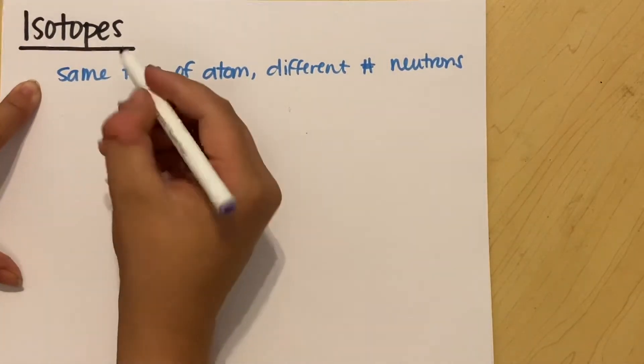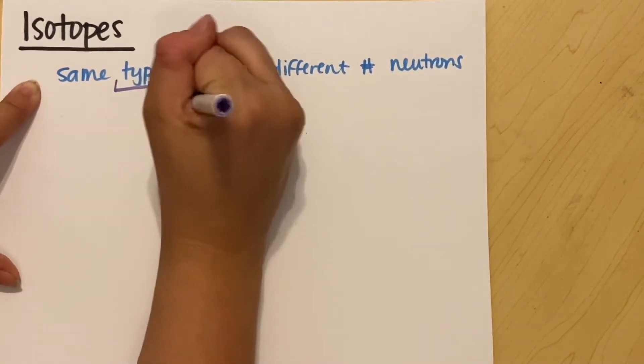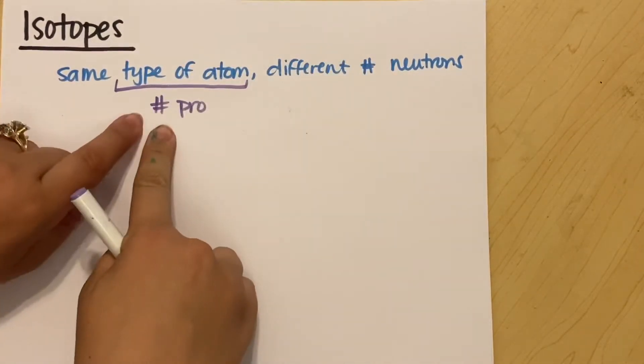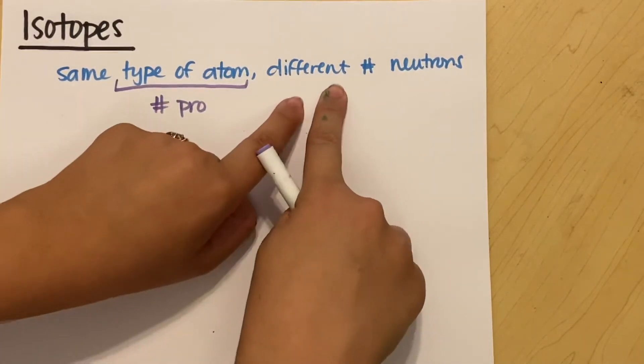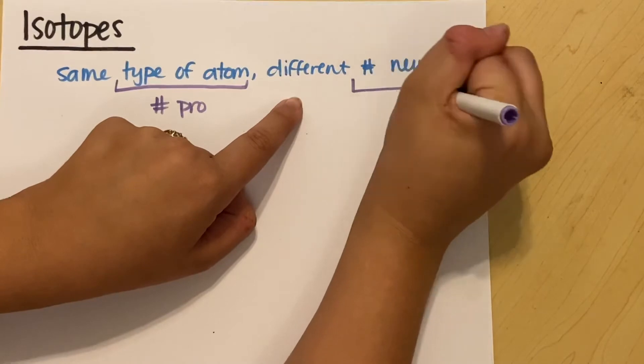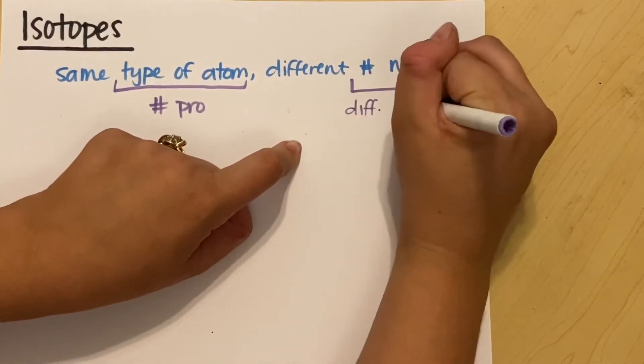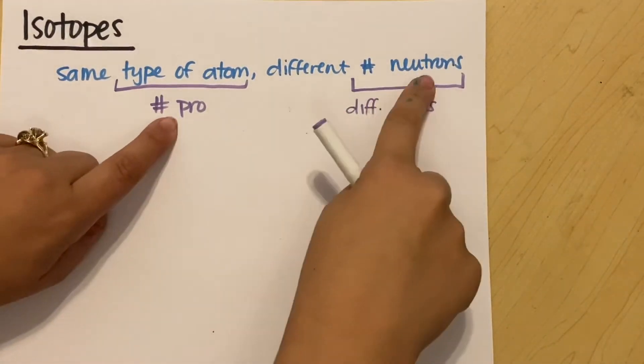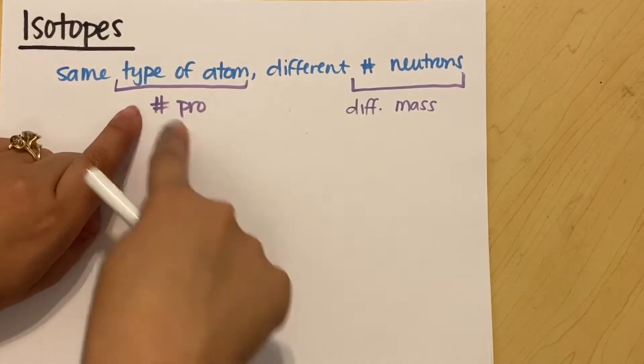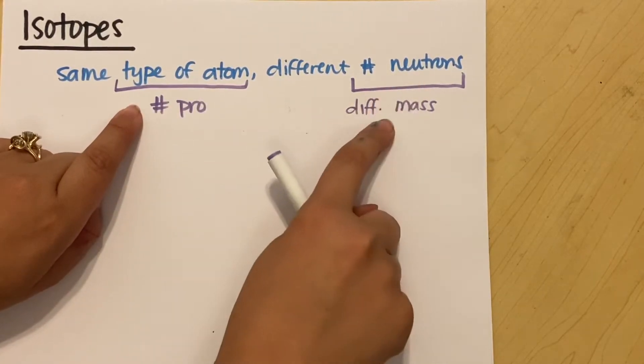So remember that types of atom are determined by number of protons. So it's going to have the same number of protons, but it's going to have a different number of neutrons, which means it's also going to have a different mass, right? Because my mass is my protons plus my neutrons. So if it has the same number of protons, because it's the same type of atom, but a different number of neutrons, it's going to have a different mass.